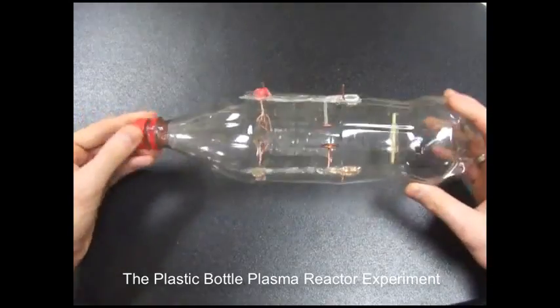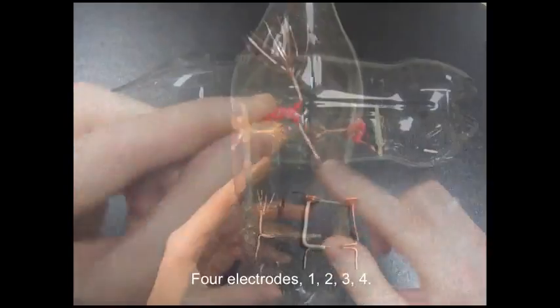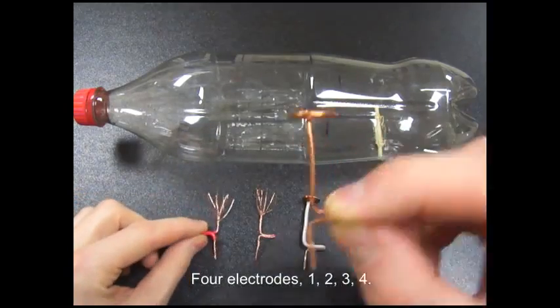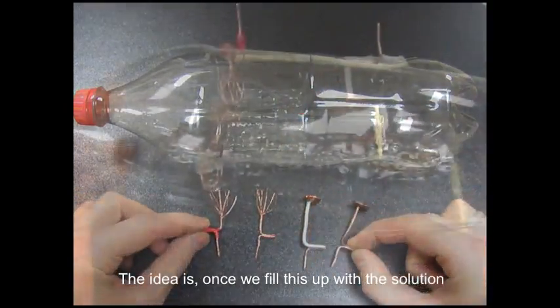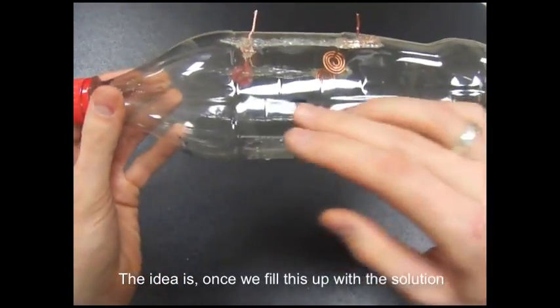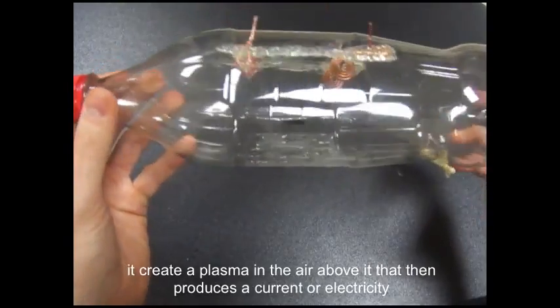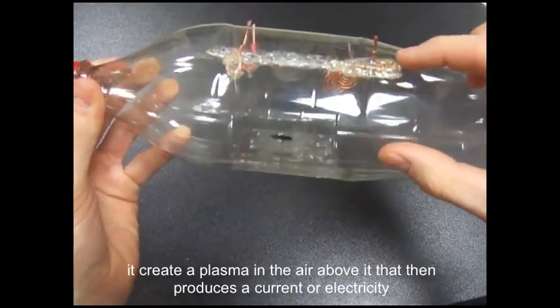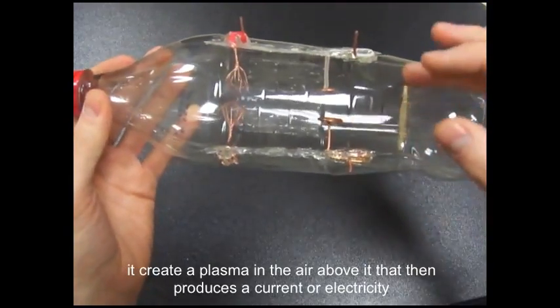This is the plastic bottle plasma reactor experiment. Four electrodes. One, two, three, and four. And the idea is that once we fill this up with the solution, it creates a plasma in the air above it that then produces a current.